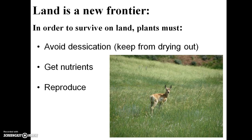Land would have been a new frontier for plants to colonize. In order to survive on land, plants must avoid desiccation — basically avoiding drying out — so they have to be able to retain sufficient water and obtain water from the soil. They also need to obtain nutrients and they need to reproduce.